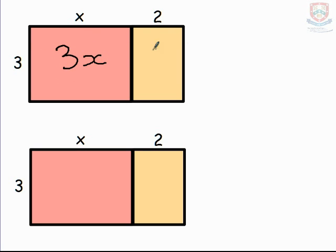And the orange rectangle, well the height is still 3, so 3 times 2 is 6. So if I put those two together, what I end up with is 3x plus 6. And that's the area of my rectangle.